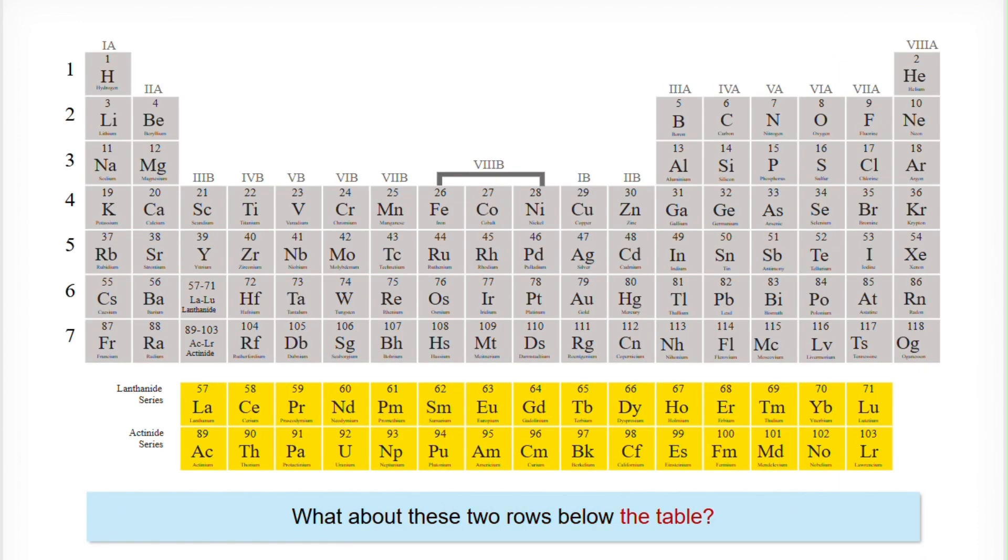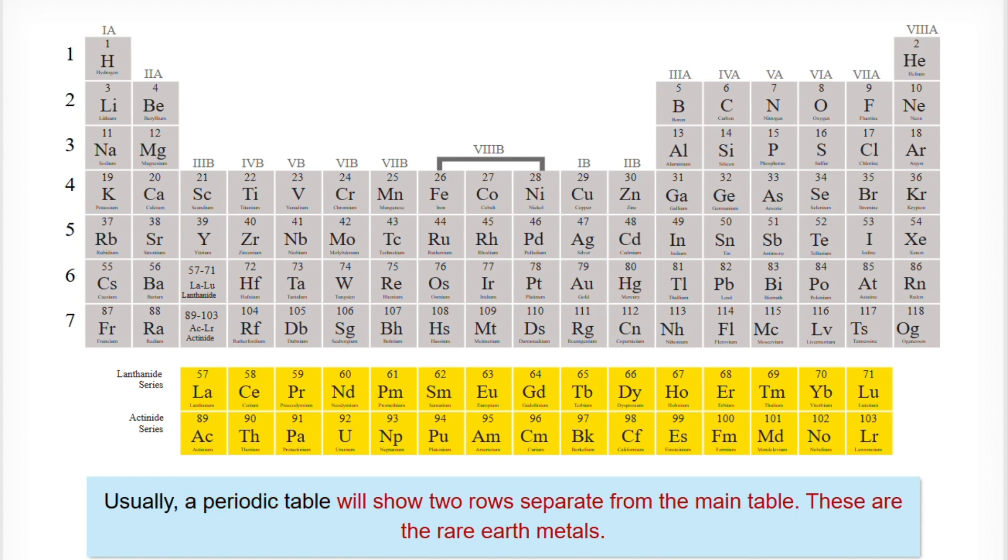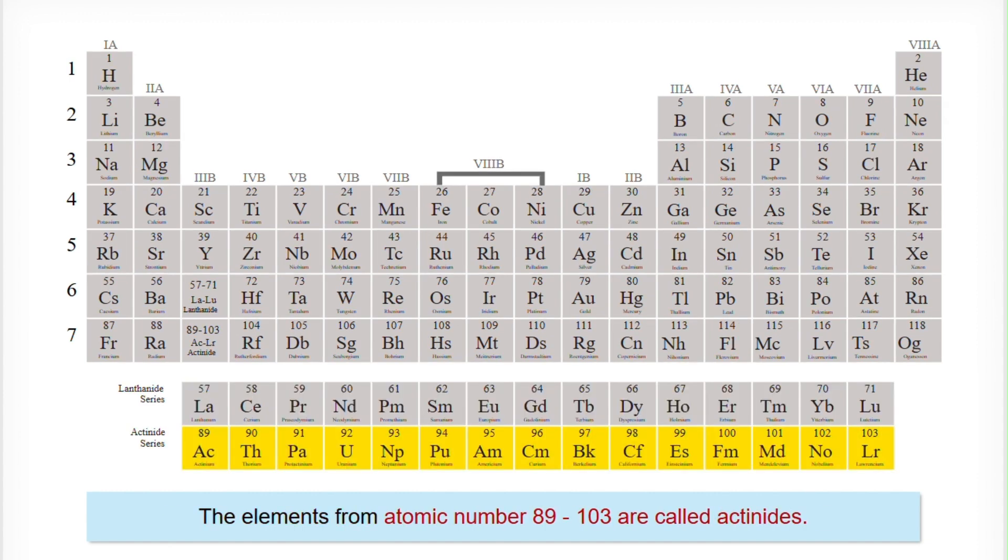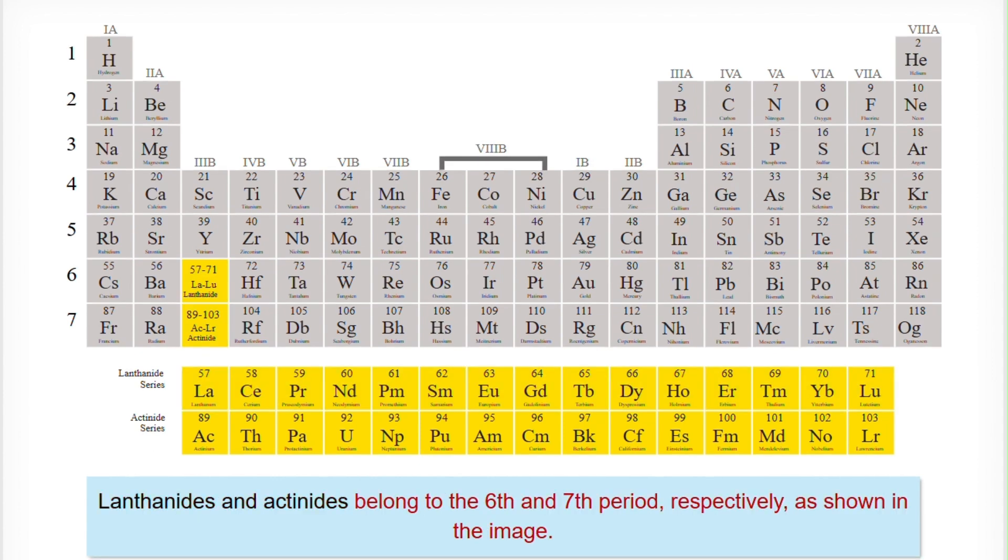What about these two rows below the table? Usually a periodic table will show two rows separate from the main table. These are the rare earth metals. The elements from atomic number 57 to 71 are called lanthanides. The elements from atomic number 89 to 103 are called actinides. Lanthanides and actinides belong to the 6th and 7th period respectively.